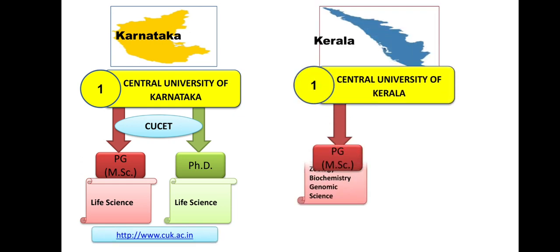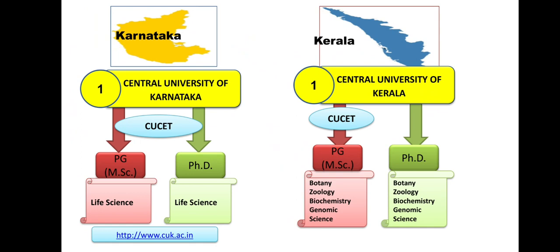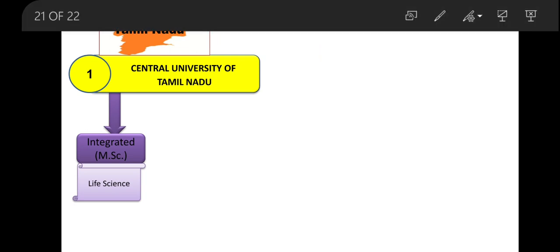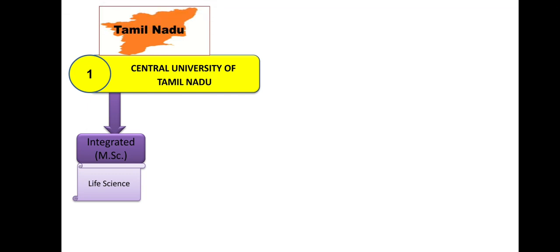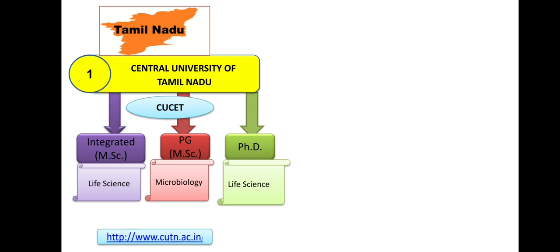Kerala: PG in Botany, Zoology, Biochemistry, and Genomic Science. For MSc, admission through CUCET. For PhD in the same subjects — Botany, Zoology, Biochemistry, and Genomic Science — they have their own entrance. Important note: for universities conducting their own PhD entrance, if a student has qualified CSIR NET, they get exemption. Tamil Nadu: Integrated MSc in Life Science, standalone MSc in Microbiology, and PhD in Life Science. Admission through CUCET.